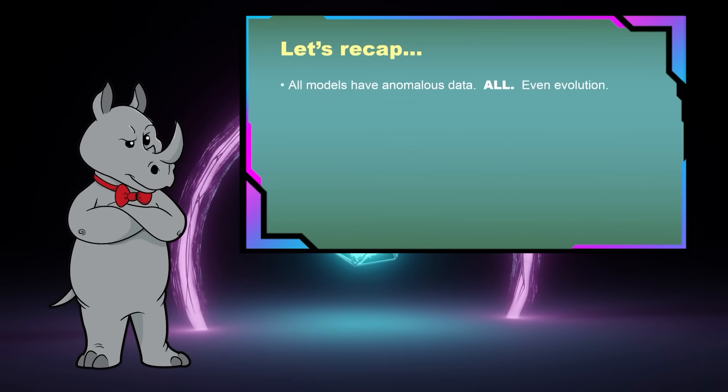First of all, that all models have anomalous data. Evolution is a model in science. All scientific models have anomalous data, things that are poorly explained or not explained. And so evolution has things that it doesn't explain very well. That's how it works.